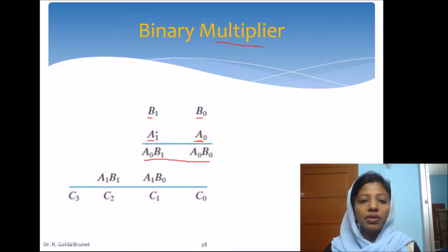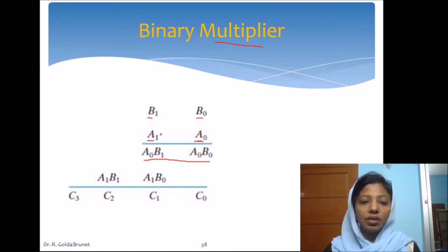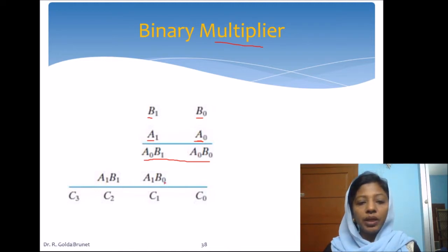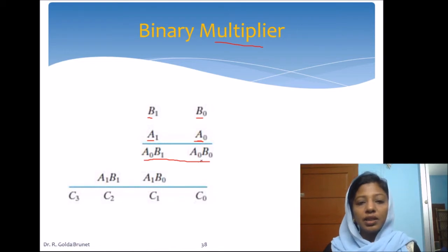Similarly, we will multiply the multiplicand B1 B0 with A1 and get the partial product A1 B1, A1 B0. Now we will add these two things. This partial product will be shifted one position to the left, and this bit will be directly written here, and we will add these two bits and the sum is written here.